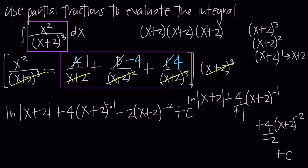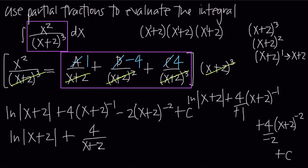Finally, we change the negative exponents back to positive by moving terms to the denominator. Our final answer is: natural log of the absolute value of x plus 2, plus 4 divided by x plus 2, minus 2 divided by x plus 2 quantity squared, plus C. This is the value of the original integral, which we found using partial fractions with repeated linear factors.